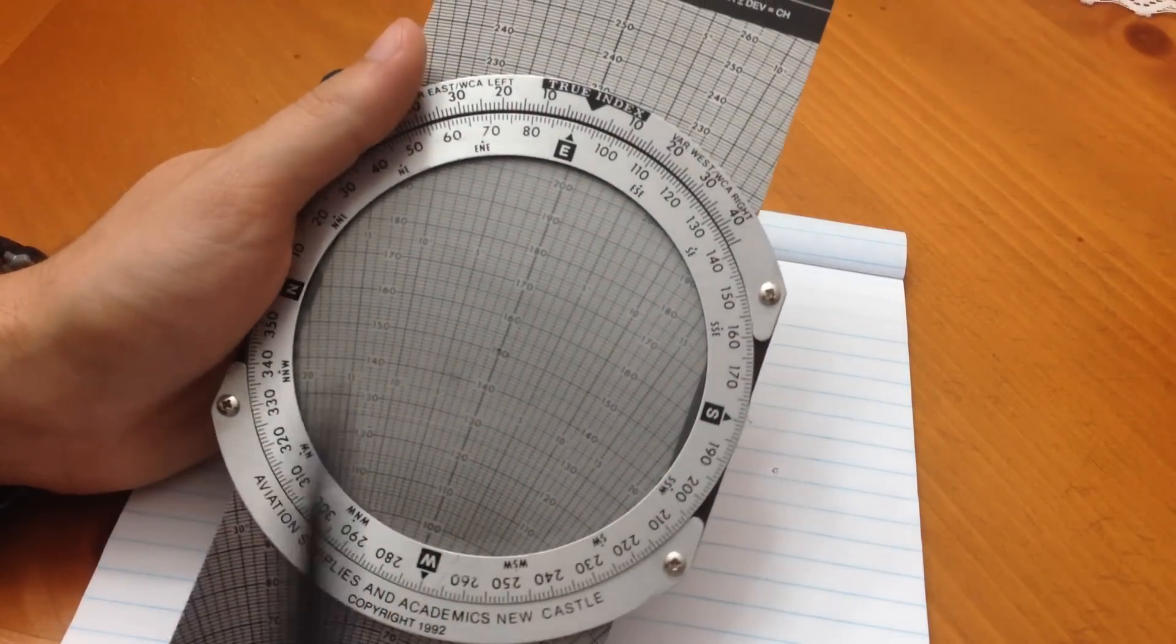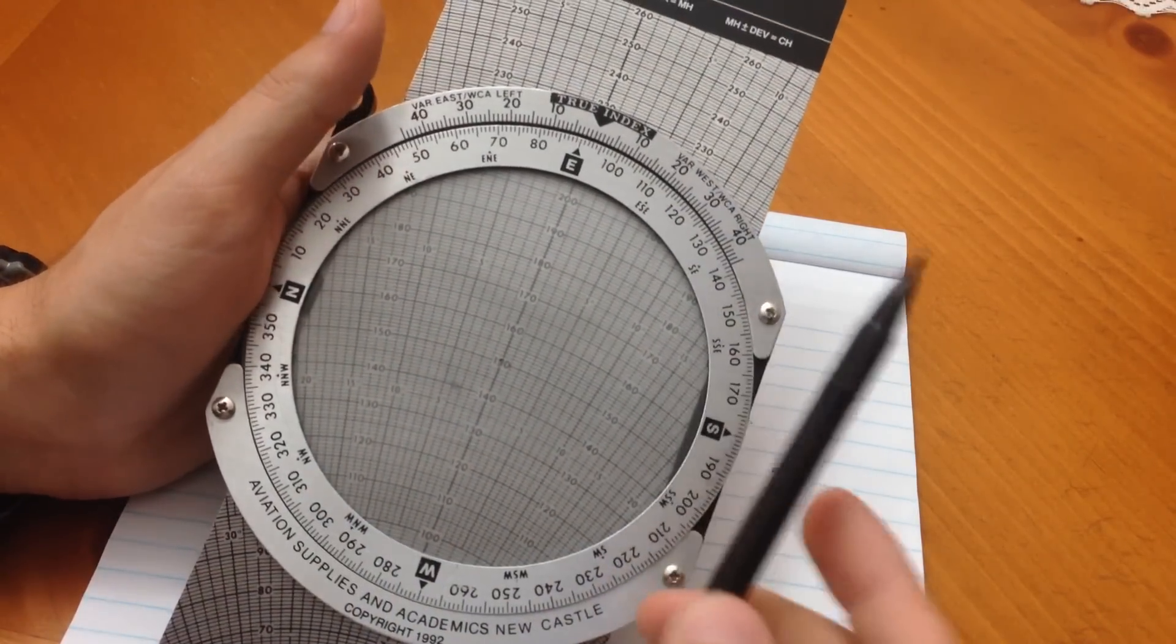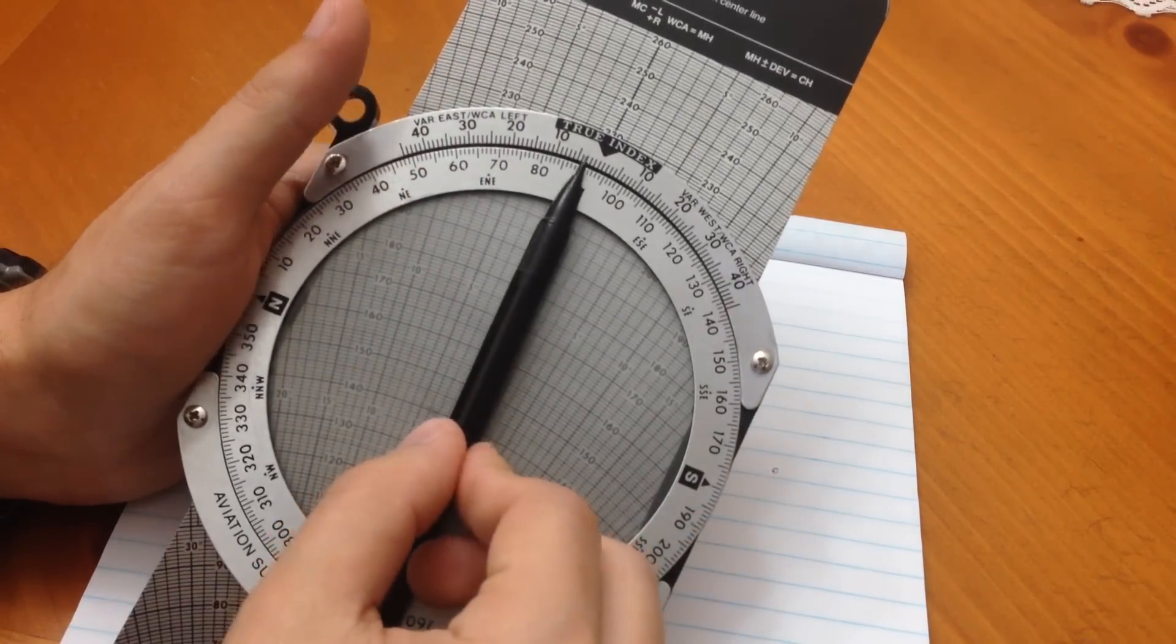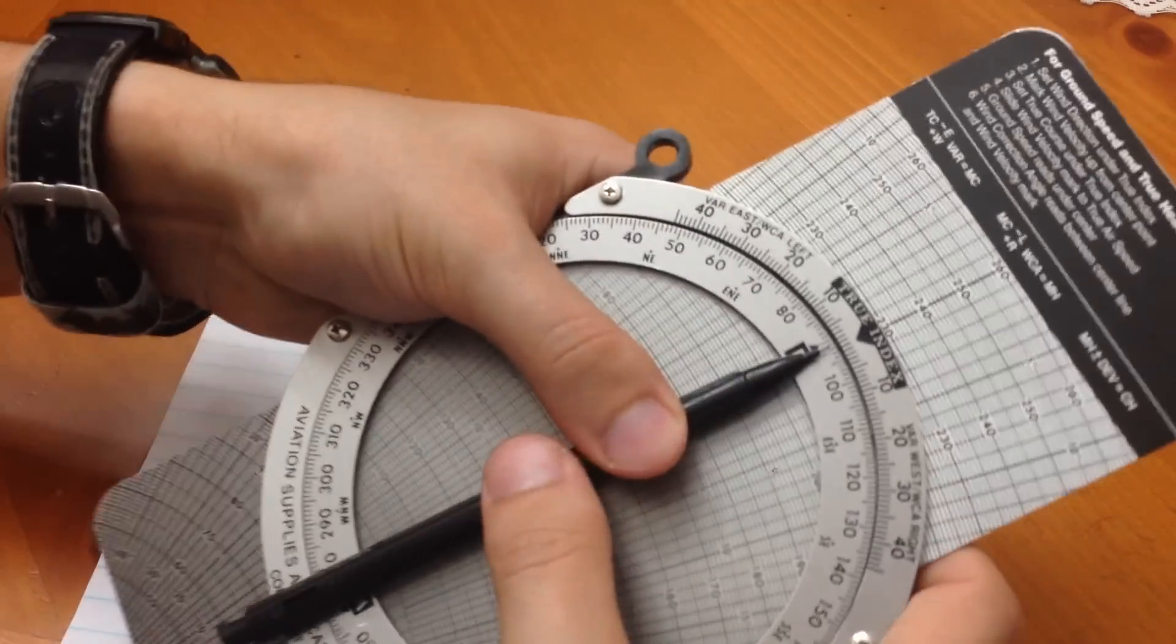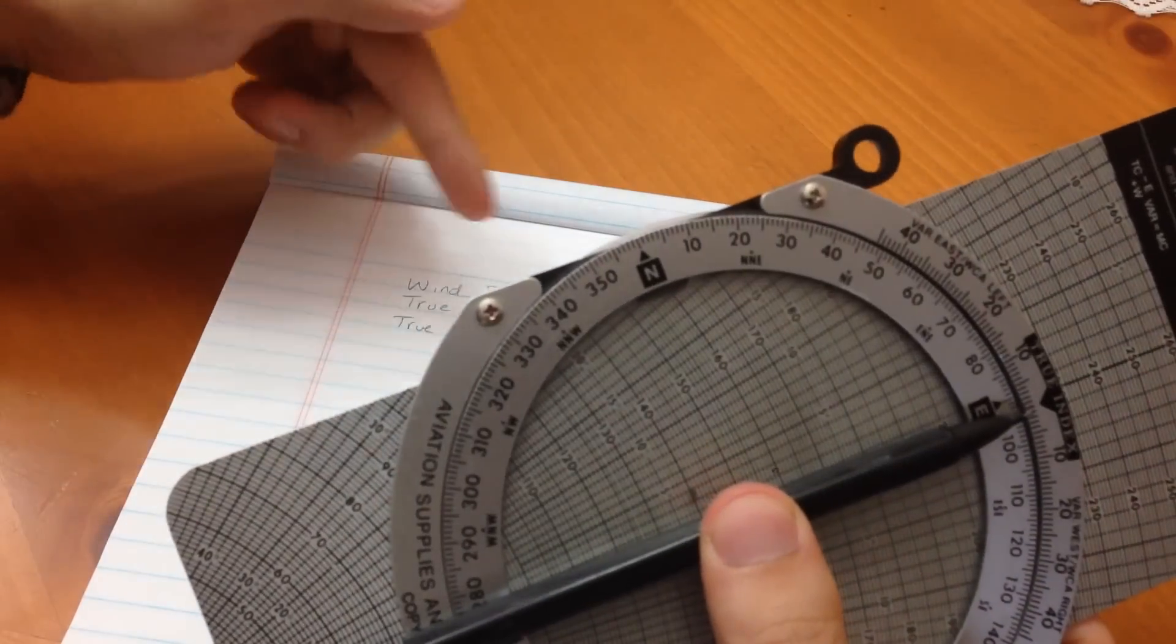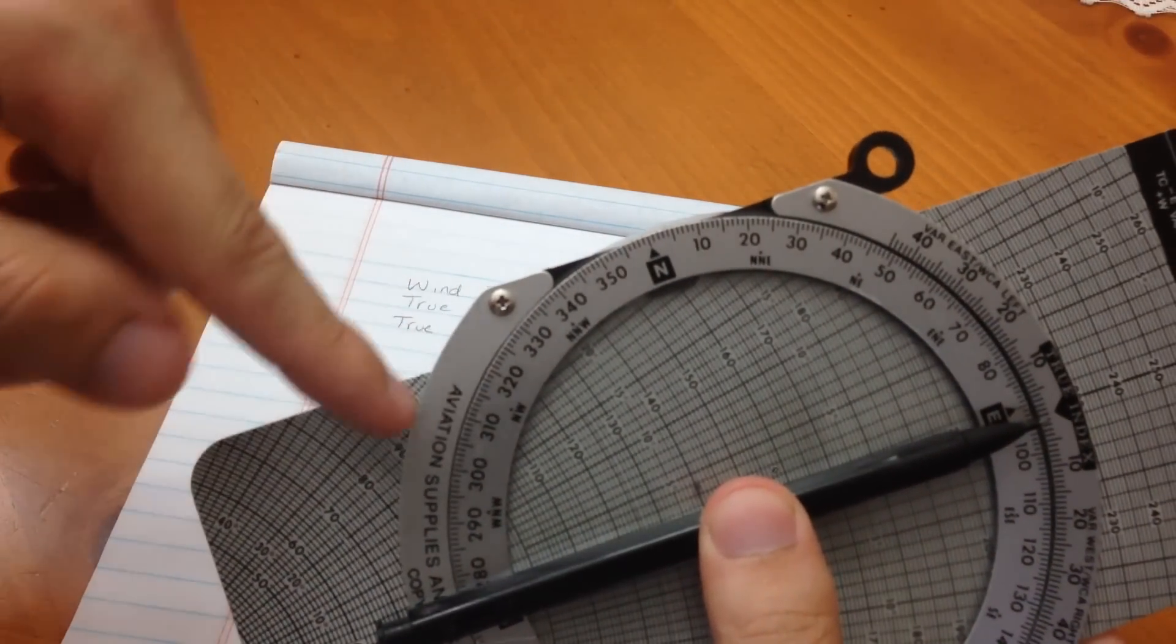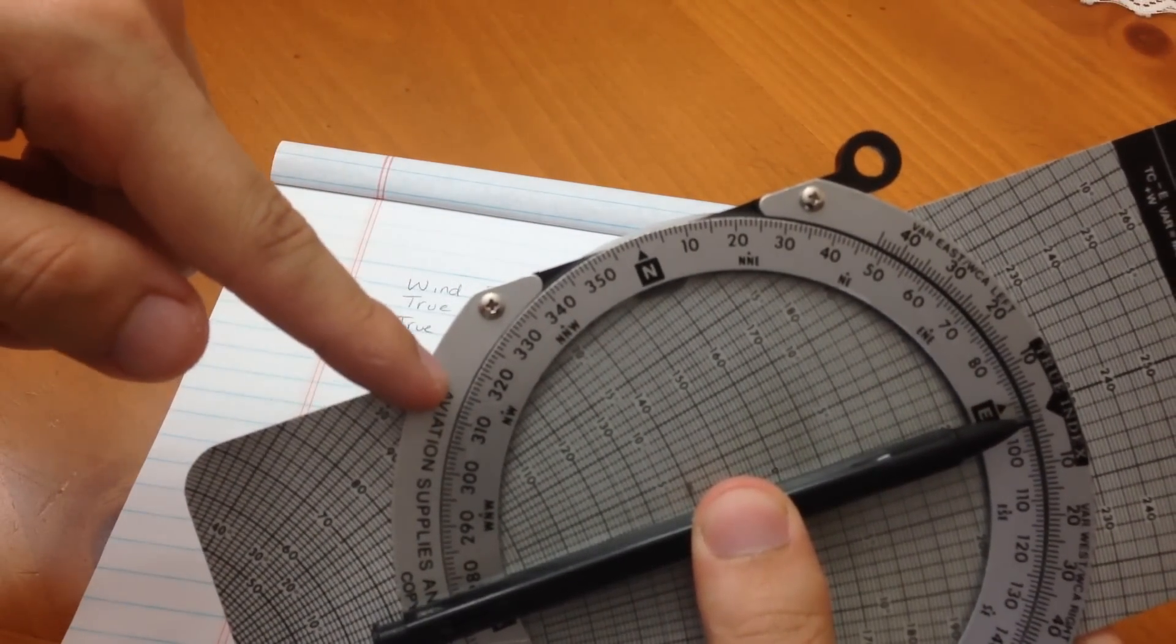And the best way to see this and to actually understand it is, picture us, this is your airplane, right? And we said, our winds are going to be coming from 315. So, if our winds are coming from 315, which is right here, it means it's going to be pushing the aircraft in this direction.